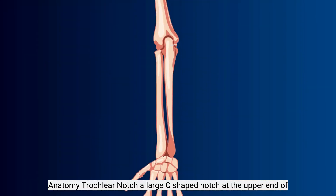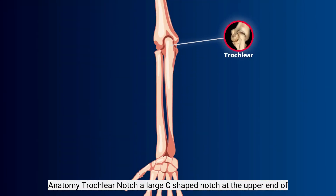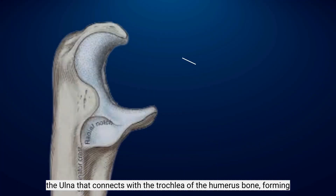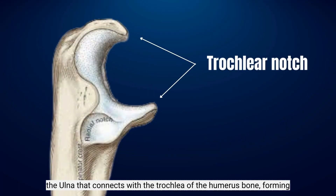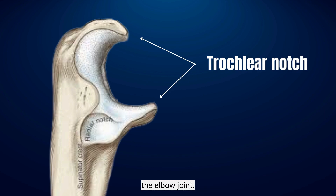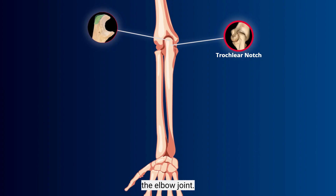Anatomy. Trochlear notch: a large C-shaped notch at the upper end of the ulna that connects with the trochlea of the humerus bone, forming the elbow joint.